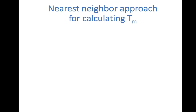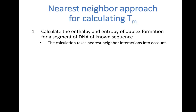The nearest neighbor approach for calculating the melting temperature of DNA involves two steps. First, we calculate the enthalpy and entropy of duplex formation for a segment of DNA of known sequence. The calculation takes nearest neighbor interactions into account. This is different from the Marmer-Doty method, since to apply the Marmer-Doty equation, you only need to know what fraction of the base pairs are GC base pairs. For the nearest neighbor method, you need to know each base pair's nearest neighbors — in other words, for each base pair, you need to know the identity of the adjacent base pairs, and the only way you're going to know that is if you know the sequence of the DNA.